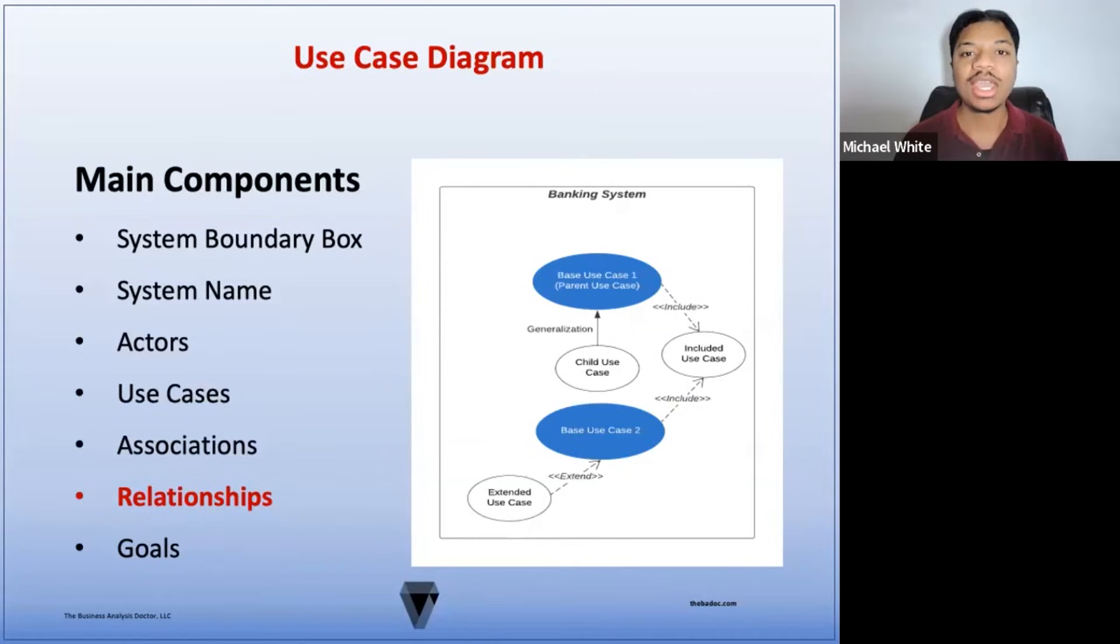Now, in order to provide examples of these relationships, it's necessary to define the term base use case. The base use case is the main use case that has a particular goal. It may use the functionality of another use case in an include relationship, or it may utilize optional or exception functionality in the extend relationship. A base use case can also be the parent use case to one or more child use cases in a generalization relationship.